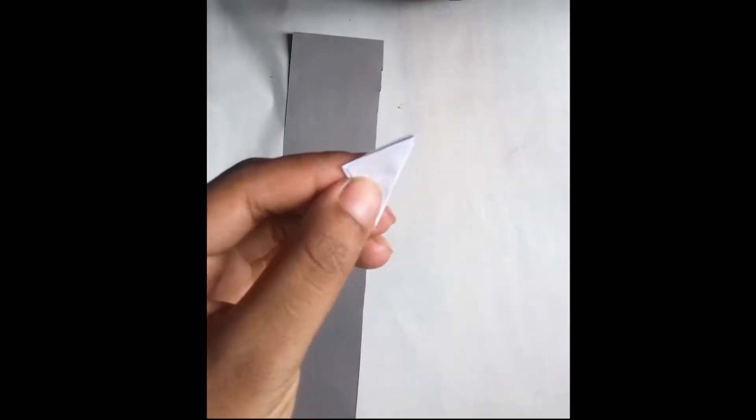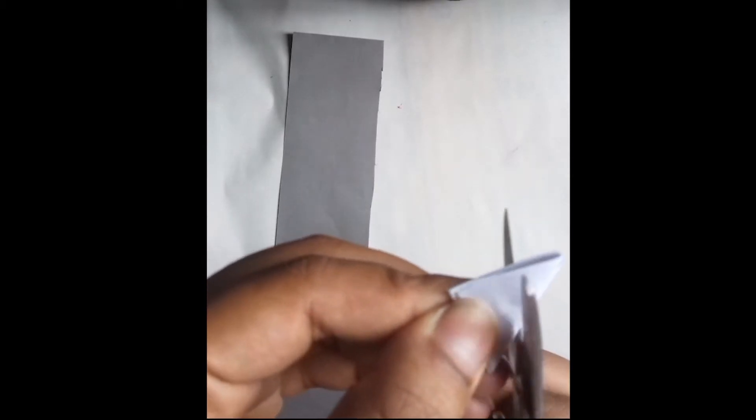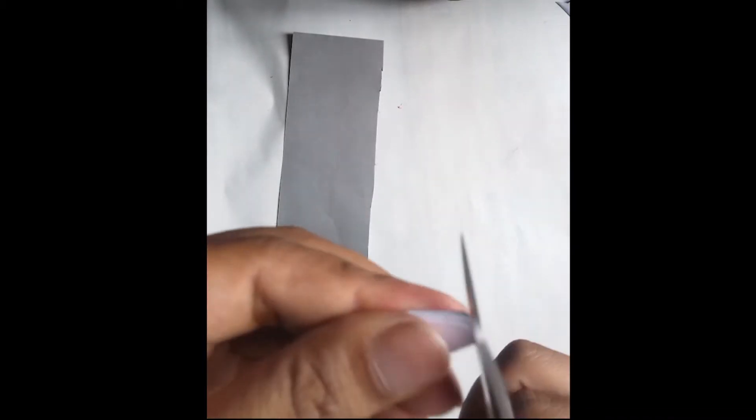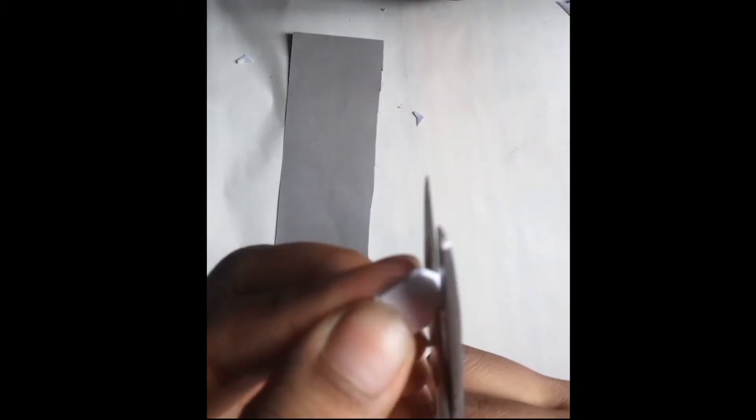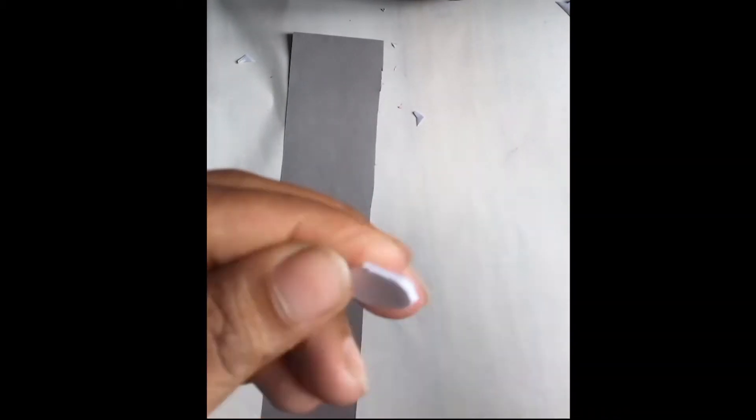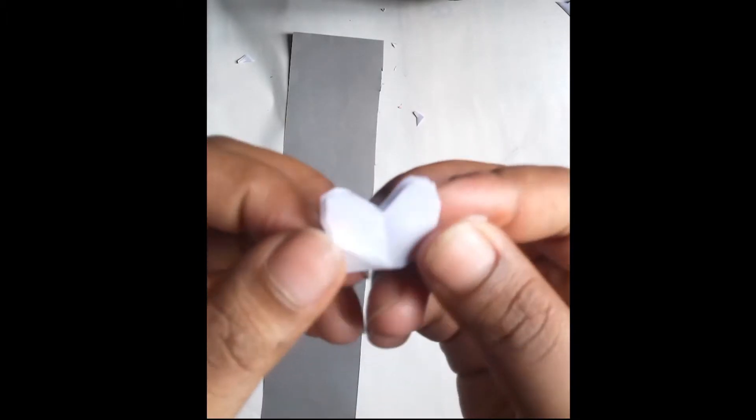Now cut its corners with scissors to make a new shape. Watch carefully. Wow, now it's become a beautiful flower!